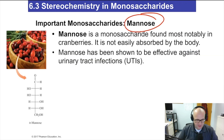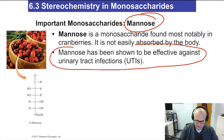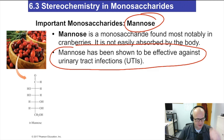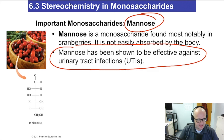Mannose is found most notably in cranberries. It is not easily absorbed by the body, and interestingly, mannose has been shown to be effective against urinary tract infections. That's why people drink a lot of cranberry juice if they have a urinary tract infection or think they might be getting one.